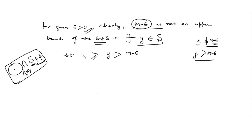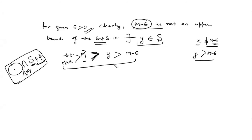Now clearly, Y is less than or equal to capital M, because all elements of set S are less than or equal to M since M is the least upper bound. And further, Y is clearly less than M plus epsilon. So we can take Y strictly less than or equal to M. Therefore, there must exist some Y in S such that Y is strictly greater than M minus epsilon and strictly less than M plus epsilon.